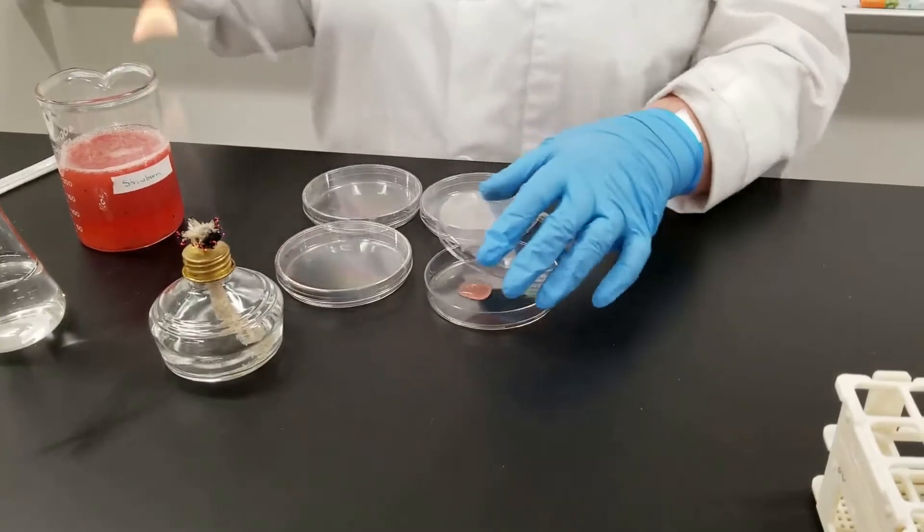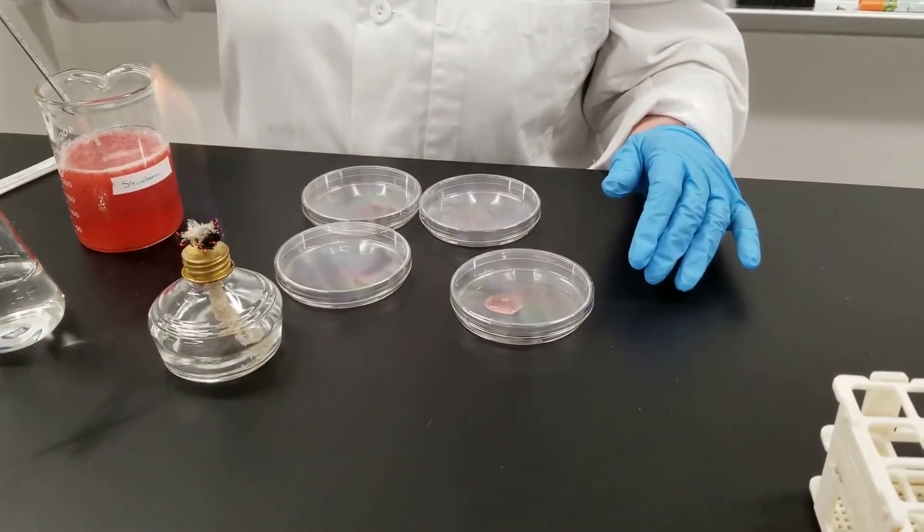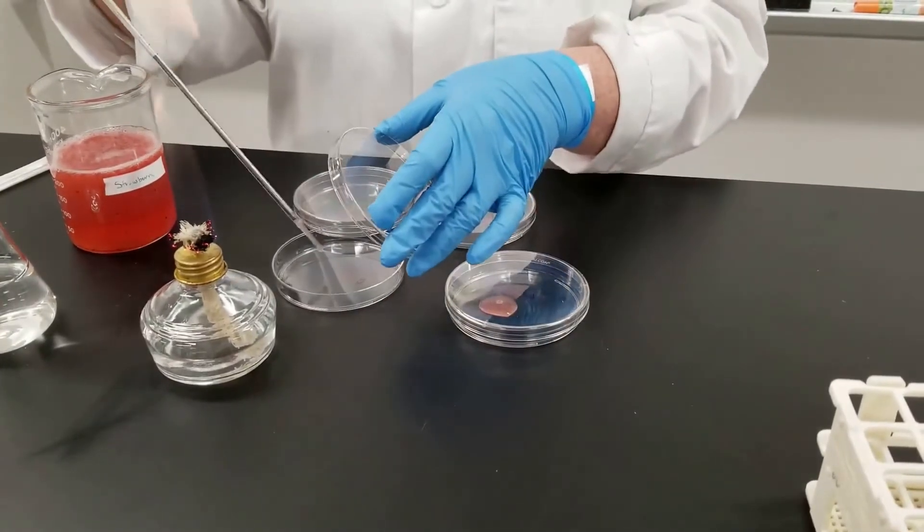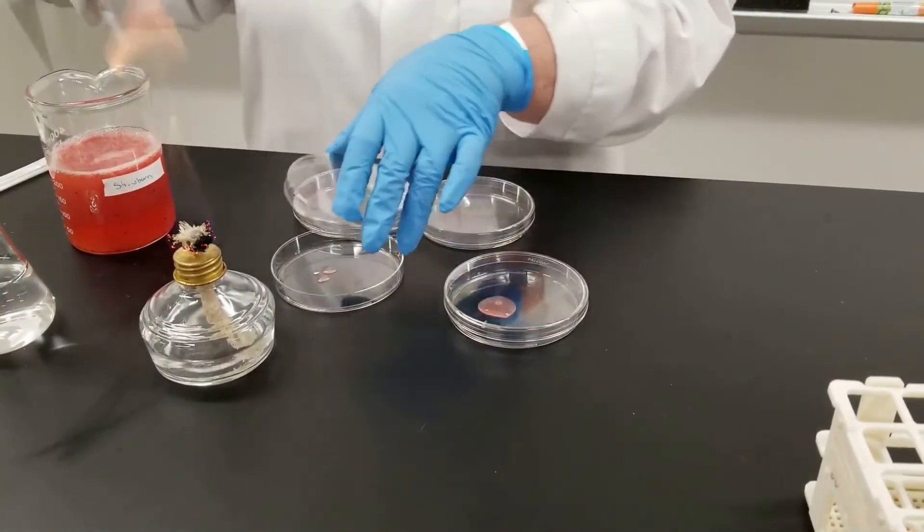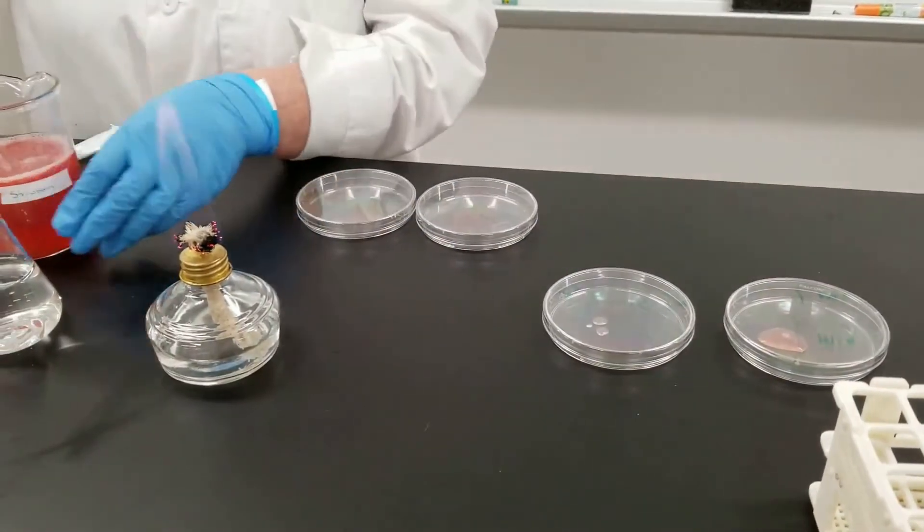And we are going to take a milliliter out of the slushy sample and add a milliliter in here. This is ultimately going to be a 1 to 10 dilution. Then we are going to take a tenth of a milliliter and put it into plate number two. That becomes a 1 to 100 dilution.